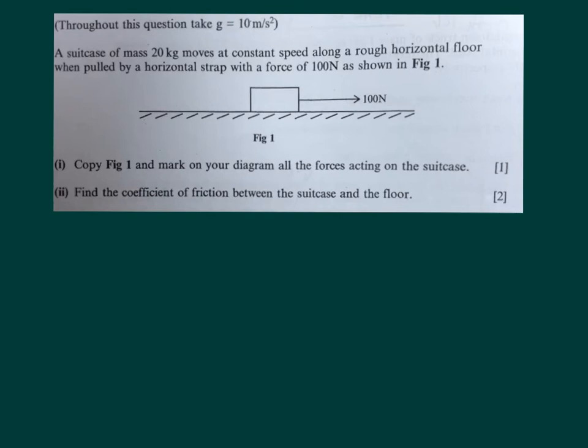In this question we're told to take G as 10 as usual. A suitcase of mass 20 kilograms moves at a constant speed along a rough horizontal floor when pulled by a horizontal strap with a force of 100 newtons as shown in figure 1. The first thing we have to do is copy figure 1 and mark on our diagram all the forces acting on the suitcase, and secondly to find the coefficient of friction between the suitcase and the floor.